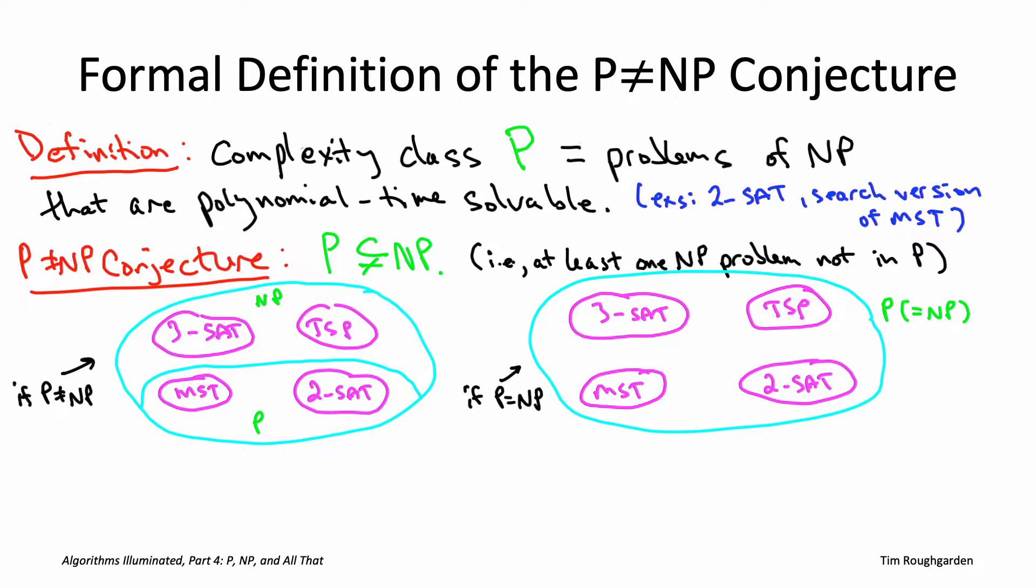As depicted in the cartoon on the slide, there are two possible states of the universe, and we don't know which one we're in. If the P not equal to NP conjecture is true, that says there exists some problem with efficiently recognizable solutions that cannot be solved in polynomial time. On the left part of the figure, we have problems we can solve in polynomial time, like minimum spanning tree or 2SAT, but then harder problems within NP like 3SAT and traveling salesman, which cannot be solved in polynomial time.